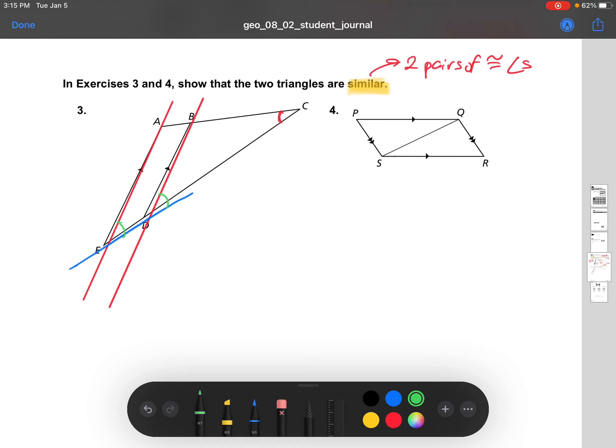So let's make a note here that we have corresponding angles. And up here, angle C, we're going to be using the reflexive property, right? To say that angle C is congruent to itself.